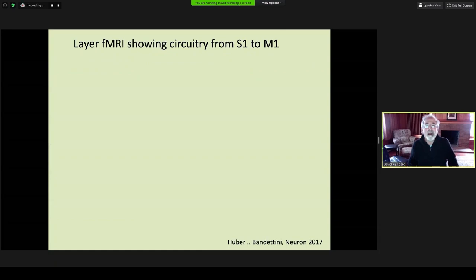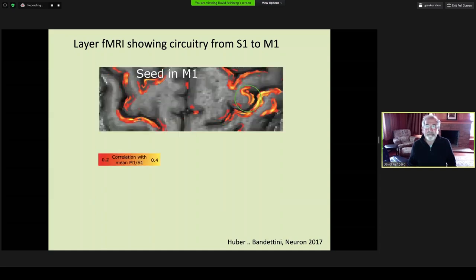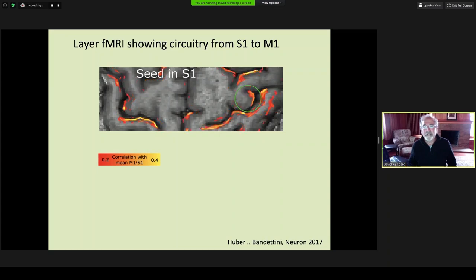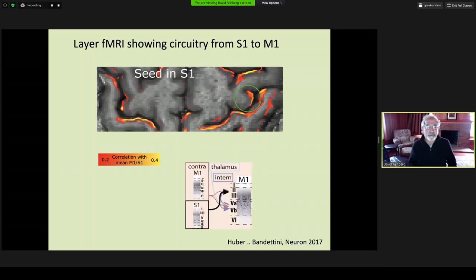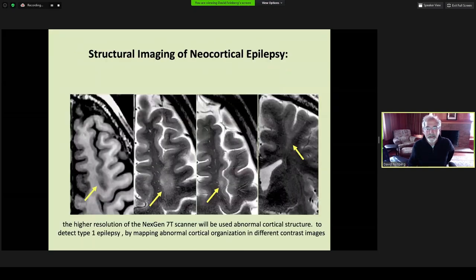Layer fMRI circuitry studies have been conducted here, some by Huber, showing the sensory cortex contralateral connectivity correlating with the motor cortex in the outer layers of the cortex, the supragranular layers. This is well known and predicted by tracer studies, with input fibers going from S1 into the outer layers of M1.